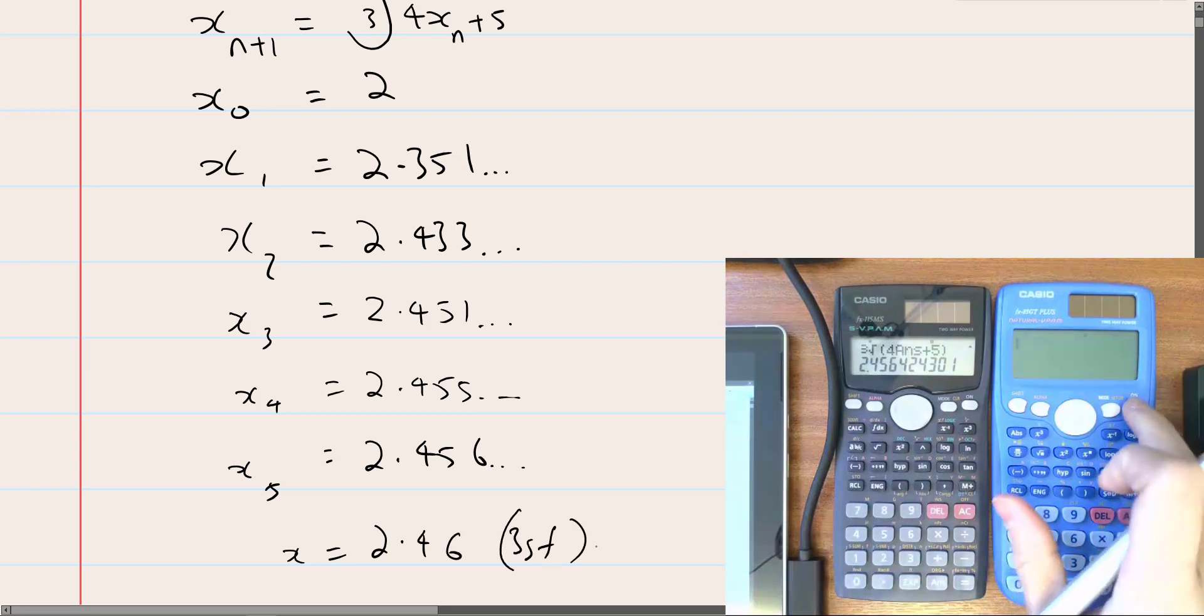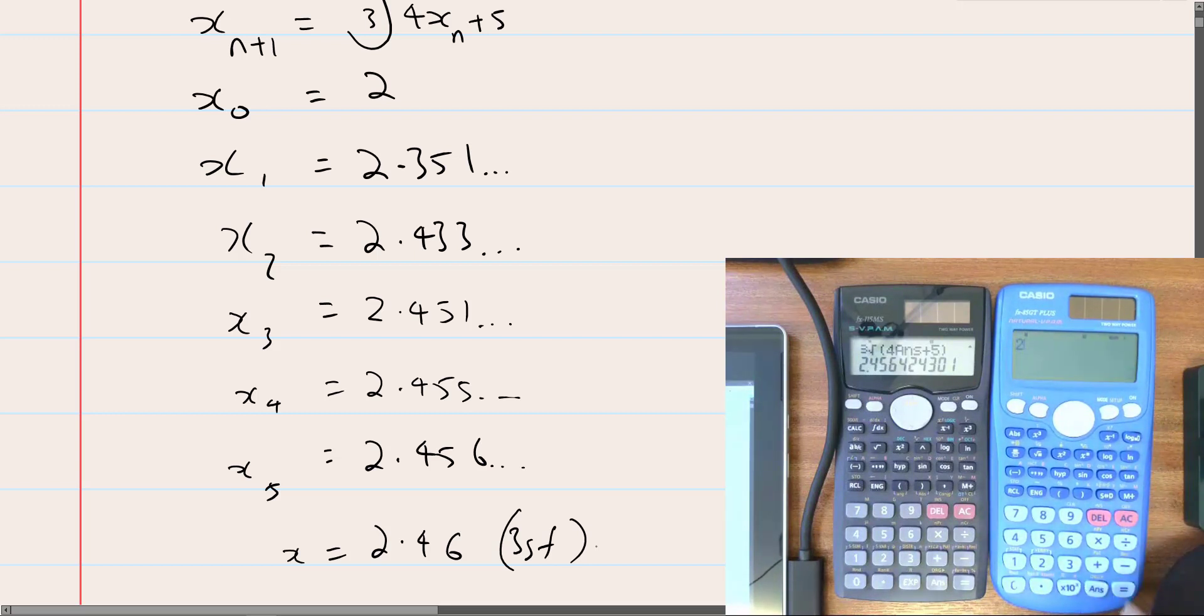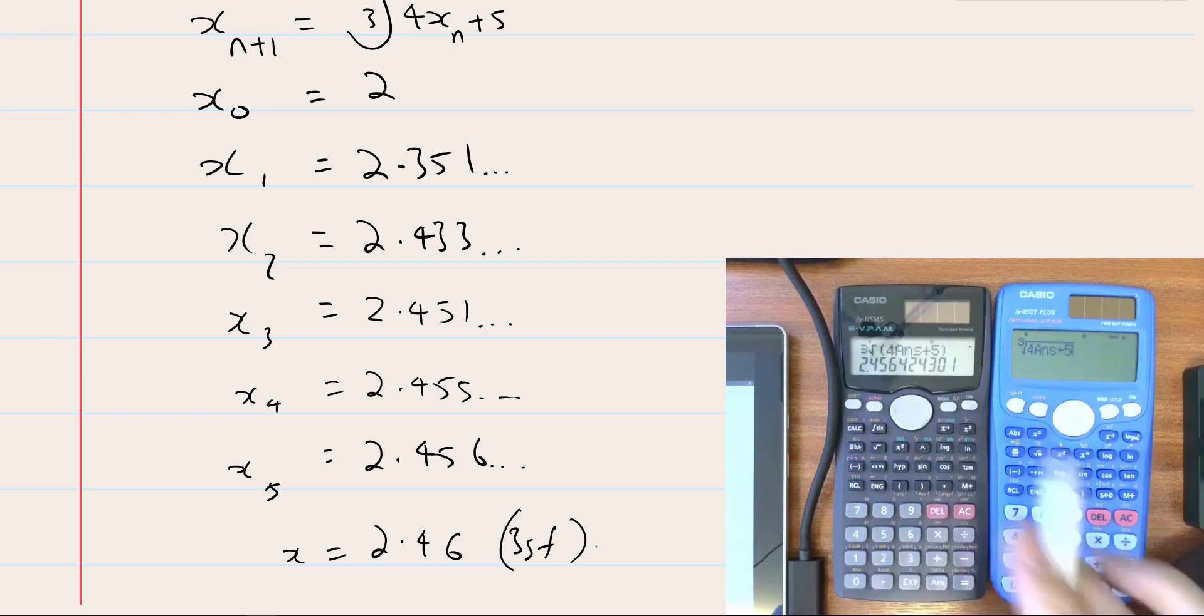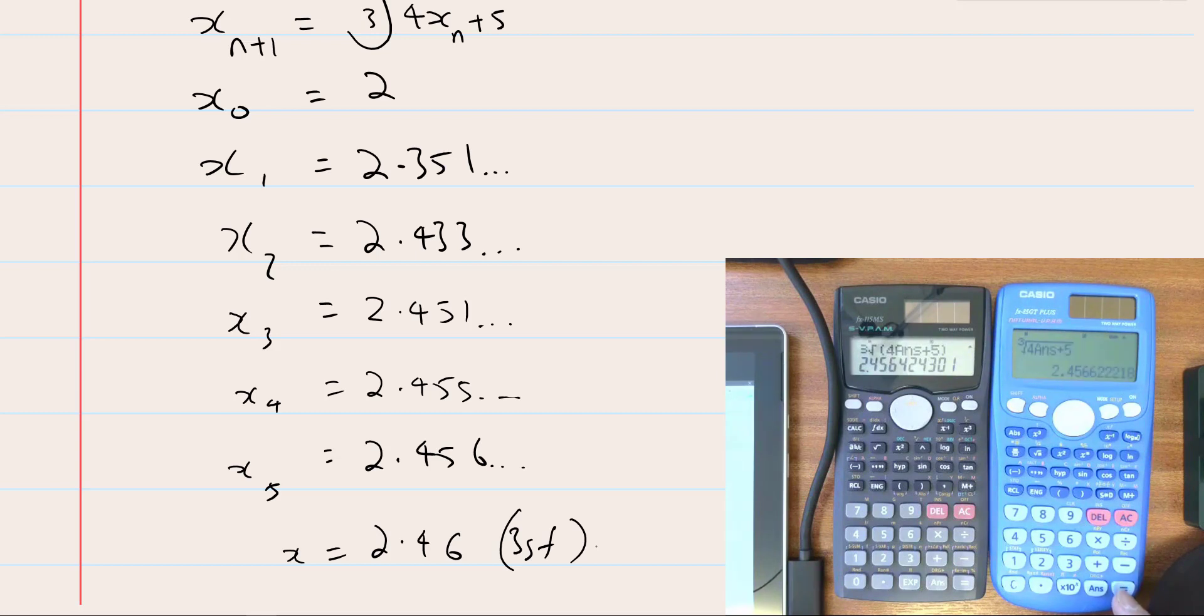Okay, so on the normal, on the natural view, it would look like this, cube root. Notice here, I don't need the brackets, because once I've hit that cube root key, it's expecting an expression to go in there. So if I do that, I should get the same values. Yeah, great.